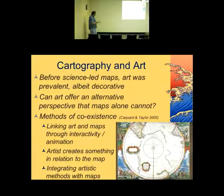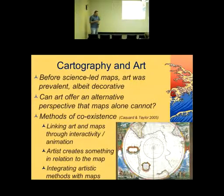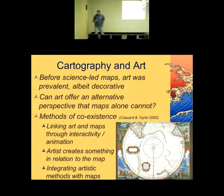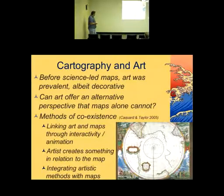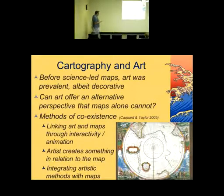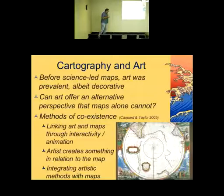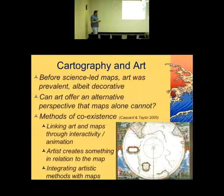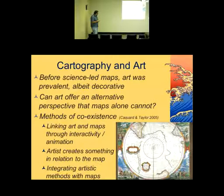One way is to have an artwork interacting with maps via some kind of computer interface, which is the example I'm going to show. Another way is the artist creating something in relation to the map or some geographic area. And the third way, from a paper by Sebastian Cacard and Fraser Taylor, is integrating artistic methods with maps — which we already see in tourist maps with artistic rendering of geographic features, sort of artificial brushstrokes and so on. But can it be taken further?